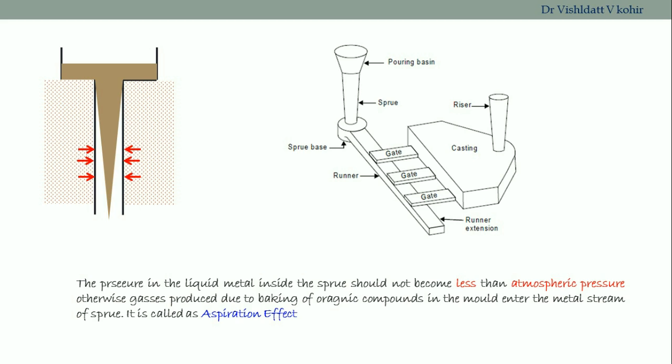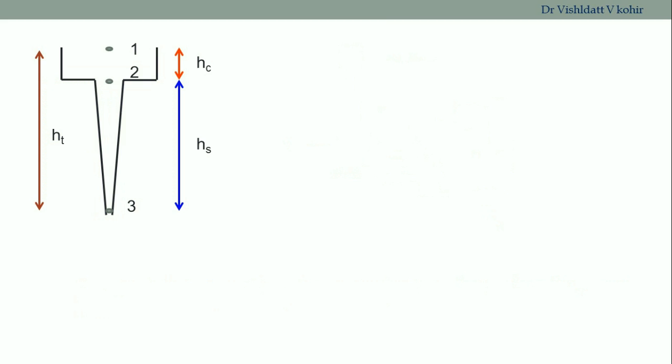Let's try to design the shape of the sprue so that we can avoid the aspiration effect. We consider three different points on the sprue: one at the beginning of the pouring basin, second at the intersection of the pouring basin and the sprue, and third at the bottom point of the sprue. Let's understand the different parameters required to design the sprue.